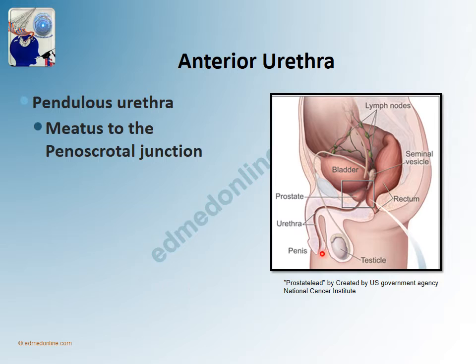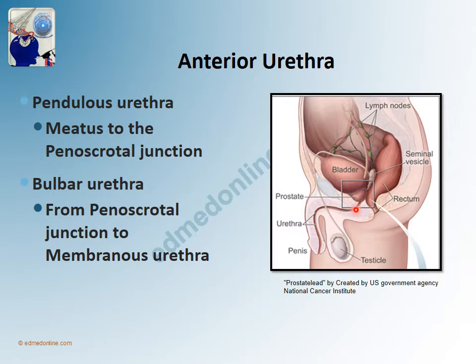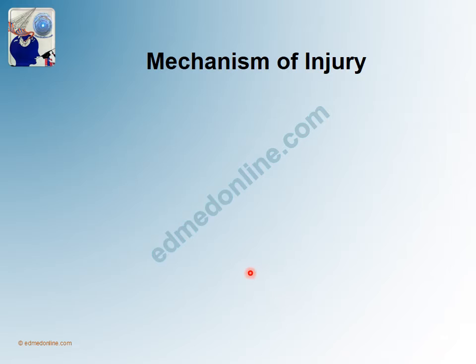Coming to the anterior urethra, it is divided into the penile urethra, which is the mobile part and is also called the pendulous urethra. It extends from the meatus till the penoscrotal junction. The bulbar urethra extends from the penoscrotal junction to the membranous urethra, that is where the perineal membrane starts.